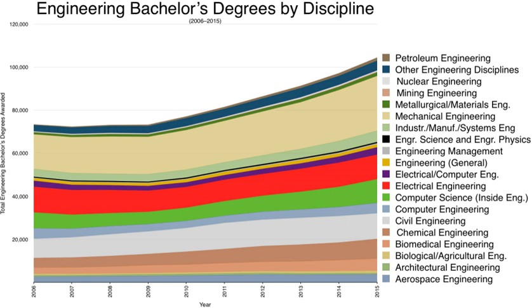Engineering training in Kenya is typically provided by the universities. Registration of engineers is governed by the Engineers Registration Act. A candidate qualifies as a Registered Engineer (R. Eng.) if he or she holds a minimum 4 years post-secondary engineering education and a minimum of 3 years of post-graduate work experience. All registrations are undertaken by the Engineers Registration Board, a statutory body established through an Act of the Kenyan Parliament in 1969.